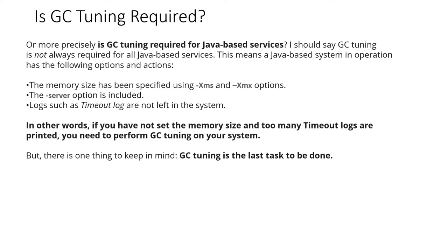Why is GC tuning required? Most performance problems can get solved by JVM tuning — meaning the heap memory options and other options that need to be tuned. If you want to tune GC, you need a good amount of stats and reports showing that the GC algorithm is a problem, because most of the time GC is not the problem — the problem is with the heap and other Java options used for the JVM.